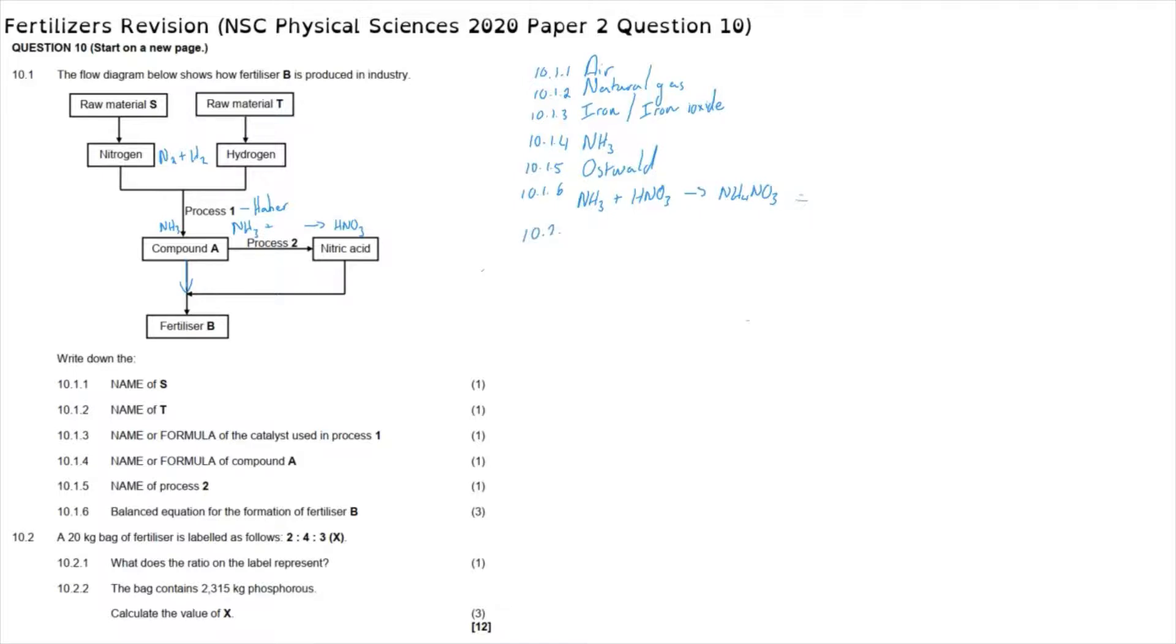Question 10.2.1: a 20 kilogram bag of fertilizer is labeled as follows: 2-4-3 in brackets, then X. What does the ratio on the label represent? That represents the ratio of nitrogen to phosphorus to potassium. We can also just call this the nutrient ratio.